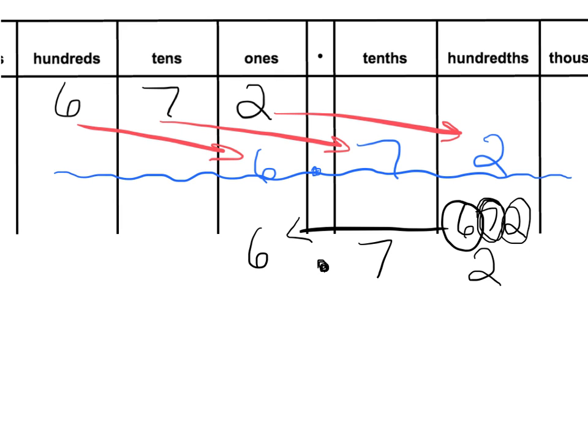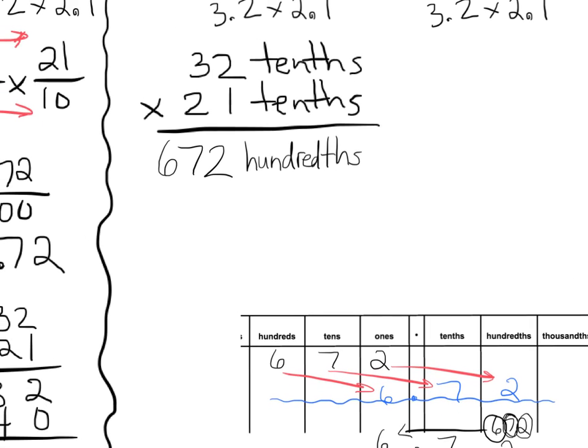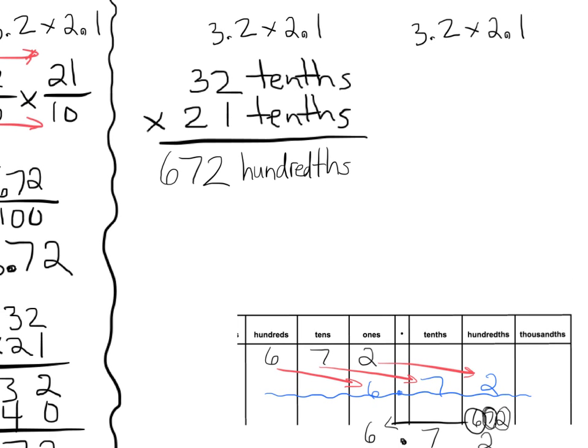And that's the exact answer that we knew all along. So again, I'm going to zoom out. And we're going to say, well, this 672 hundredths is equal to 6.72, or 6 and 72 hundredths.